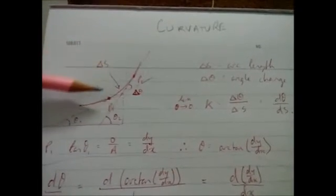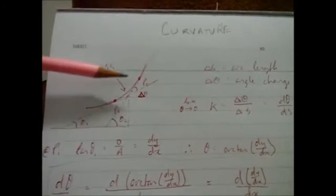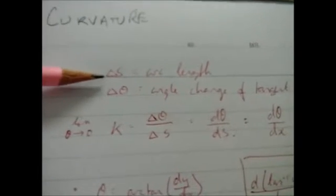If I take any curve, choose two points between it, P1 and P2. Delta S is the change in arc length, and delta theta is the change in angle of the tangent vectors there. So I'll just formalize that. This is the arc length, this is the angle change of the tangent.